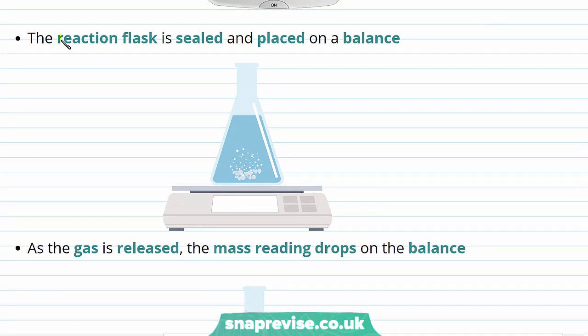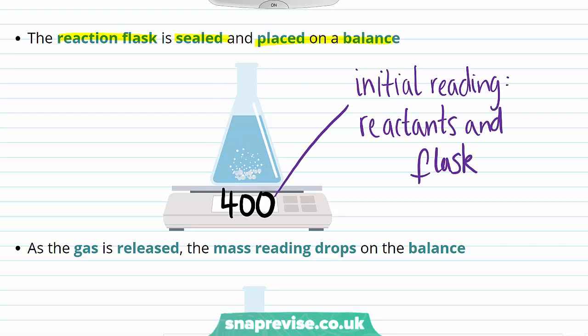In order to carry out this sort of experiment, the reaction flask is sealed and placed onto the balance. At this point, there will be an initial reading on the balance, which accounts for the mass of the reactants and the flask.